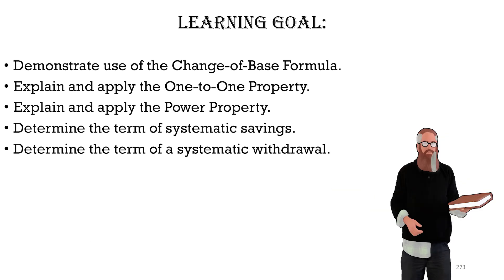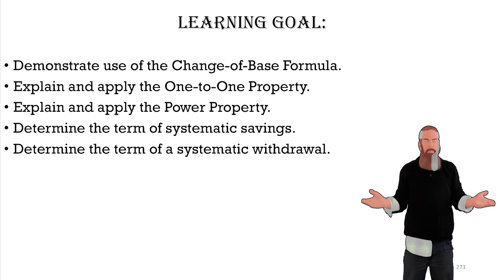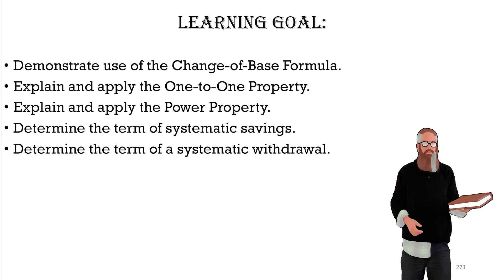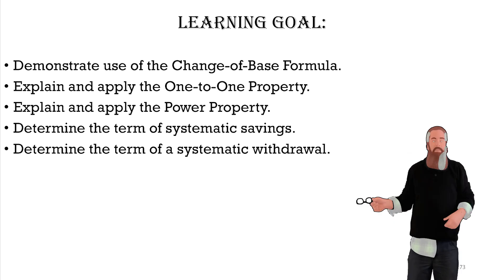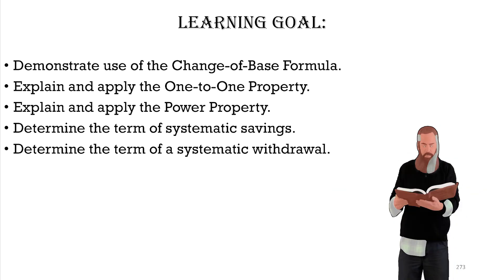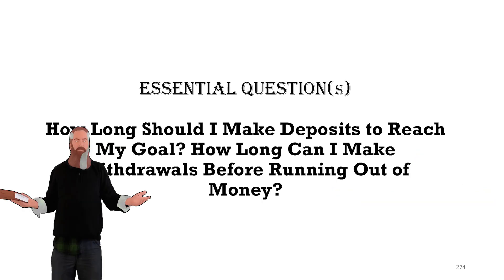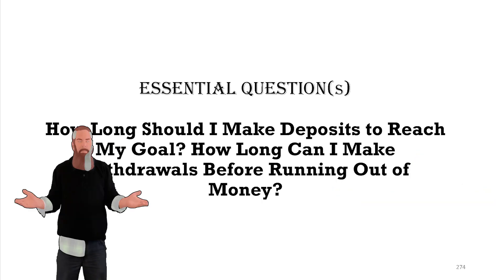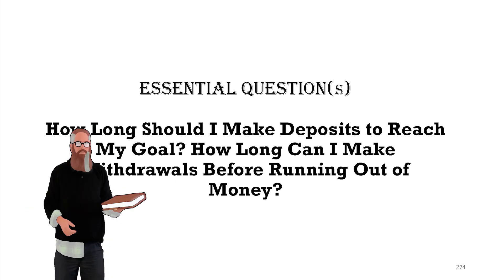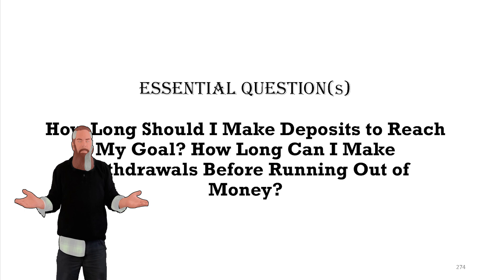We will explain and apply the one-to-one property. We will explain and apply the power property. We will determine the term of systematic savings and we will determine the term of a systematic withdrawal — all to answer the question: how long should I make deposits to reach my goal, and how long can I make withdrawals before running out of money?